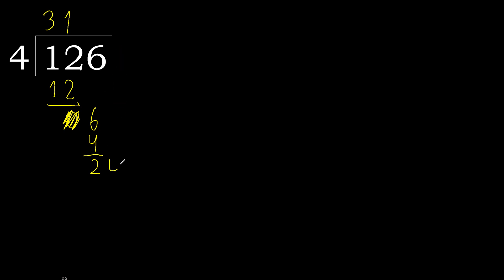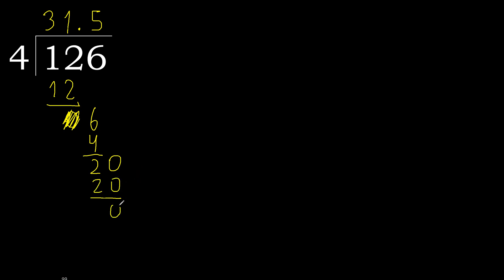There is no more number, therefore complete — always complete with 0. Here, with a decimal point. Complete. Point. 20: 4 multiplied by 5 is 20, which is not greater. Subtract: 0 remainder 0. Therefore, finish.